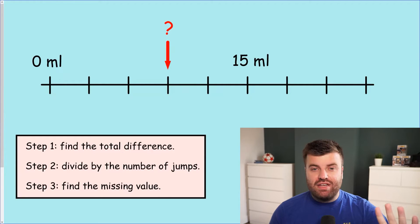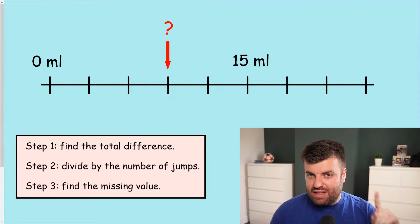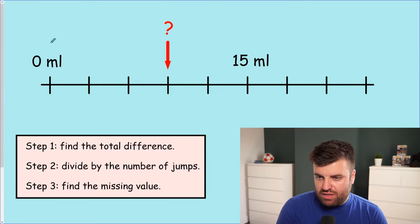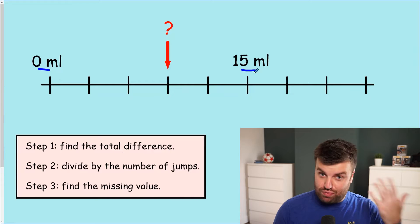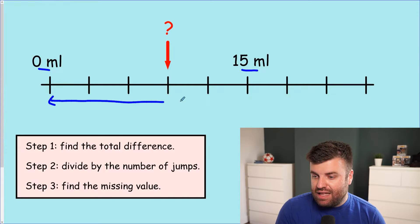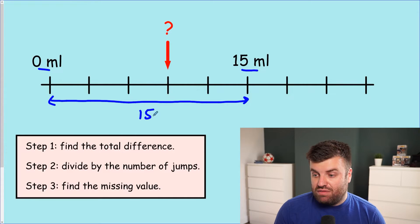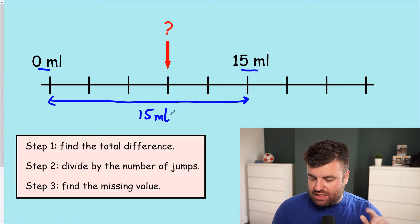Feel free to pause the video, let your children have a go, see if they can get to the right answer. Let's dive straight in. So step one, find the total difference. Well, our two given values here are zero and 15. So it's really easy to find the total difference there. Because we're working with zero, the total difference is just 15 milliliters. Just keep an eye on the units, might be useful later on.